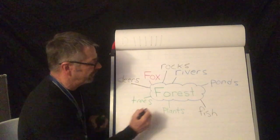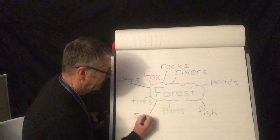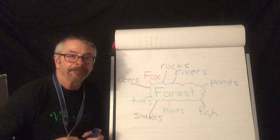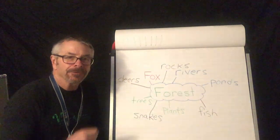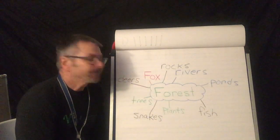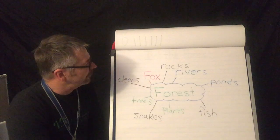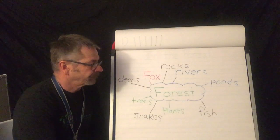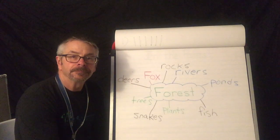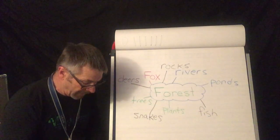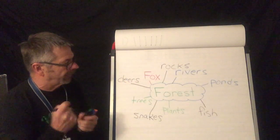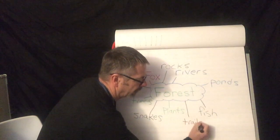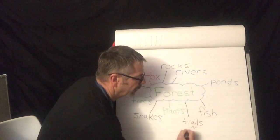Snakes? Yeah. There could be snakes. Sure. Snakes are in the forest. I've seen a snake in the forest before. What else? What else? We got trees, we got plants, deers, rocks. What else is in the forest? Paths. Yeah, like trails. Yeah. People walk in the forest, so there's trails or we could use the word path.